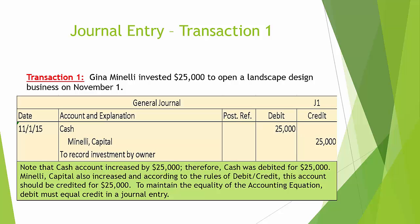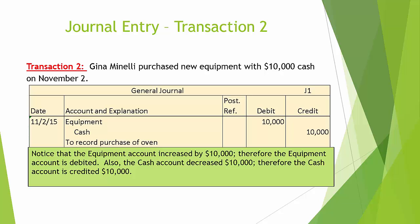To maintain the equality of the accounting equation, debits must equal credits in a journal entry. Transaction number 2: Gina Minnelli purchased new equipment with $10,000 cash on November 2. Notice that the equipment account increased by $10,000, therefore the equipment account is debited. Also, the cash account decreased $10,000, therefore the cash account is credited $10,000.